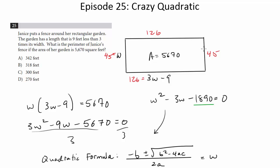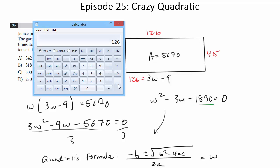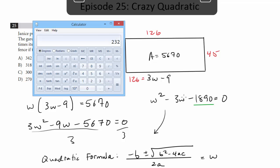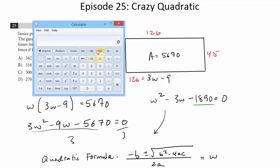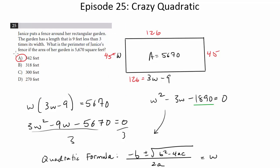And now to get the answer, which is the perimeter, we add these all up. So 45 plus 45 is 90. 90 plus 126 plus 126 is 342. And that would be choice A.